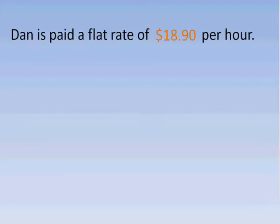First, we're going to look at flat rates. The example here is a guy who's getting a flat rate of $18.90 an hour. What's meant by a flat rate is it doesn't matter how many hours you work — whether it's 1, 10, or 100 hours — you're still getting paid the same amount per hour. So Dan here gets his $18.90 per hour.